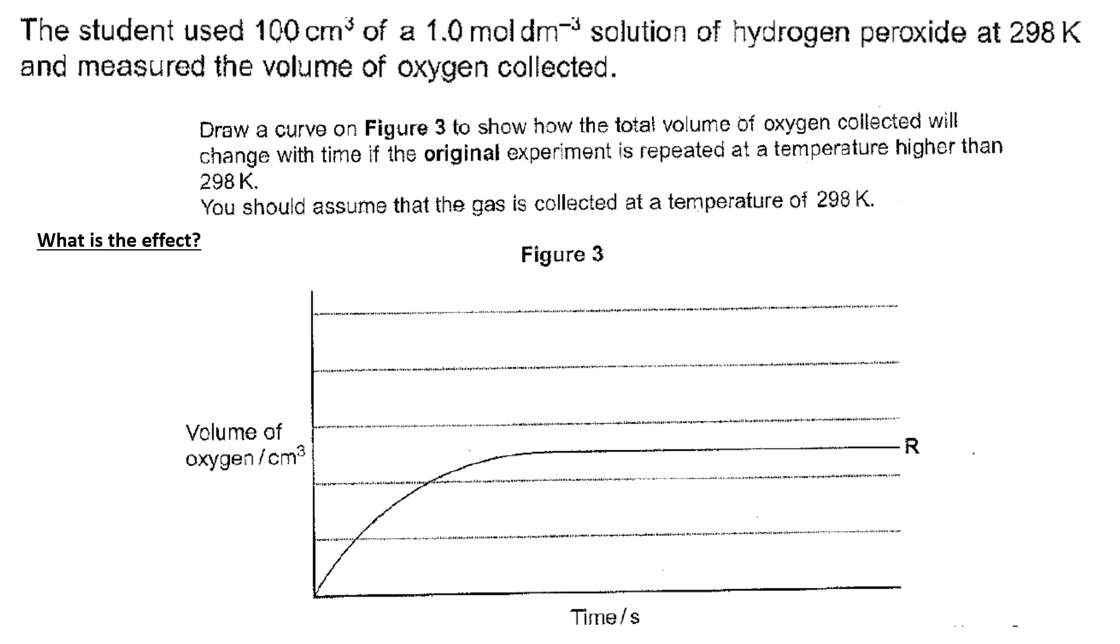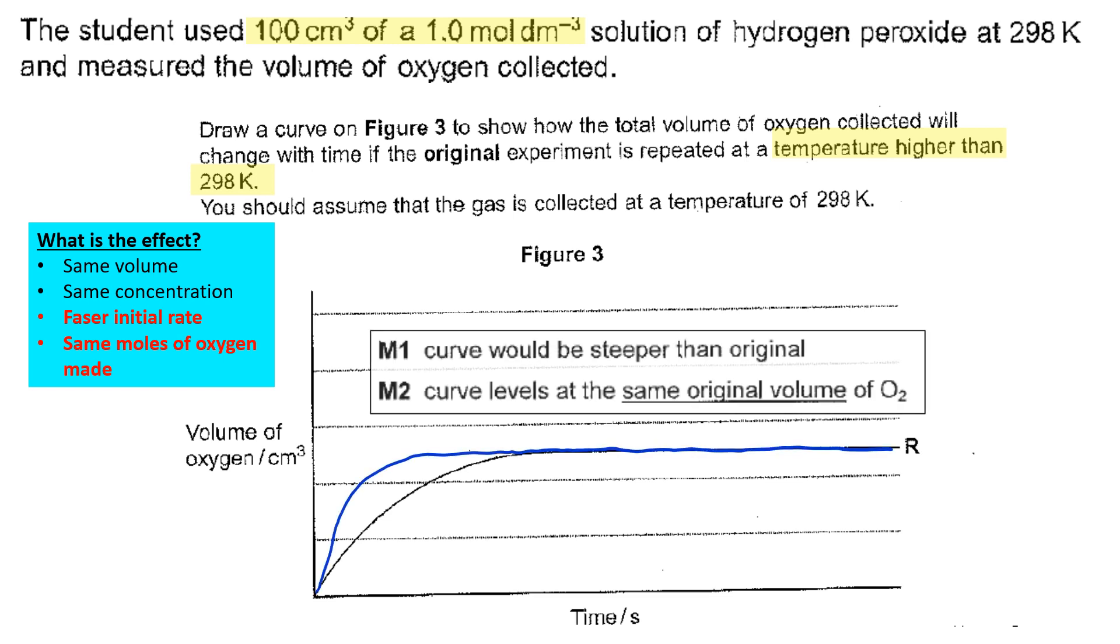This time, draw a curve on figure three to show how the total volume of oxygen collected will change with time if the original experiment is repeated at a temperature higher than 298K. The original conditions are in place in terms of volume and concentration, but the higher temperature is going to make the reaction faster, so the same number of moles of oxygen is made. The curve would be steeper than the original and levels at the same original volume of O₂.